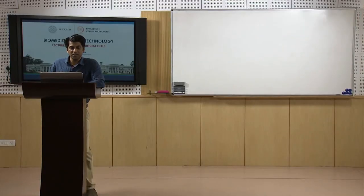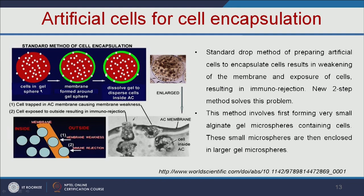There are two methods to encapsulate cells into artificial cells. The first is the standard method of cell encapsulation: cells are encapsulated into a gel sphere, then a membrane is formed around the gel sphere, and the gel is dissolved to disperse cells inside the artificial cells. The major drawback is that cells can become trapped in the artificial cell membrane, causing membrane weakness. Some cells end up exposed to the outside environment, resulting in immune rejection.